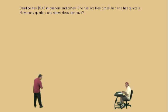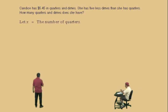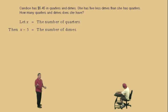Now, Candace has 5 dollars and 45 cents in quarters and dimes. Don't get scared. She has 5 less dimes than she has quarters. How many quarters and dimes does she have? I don't know. That's what we're going to figure out, Charlie. Let's let x equal the number of quarters. And since there are 5 less dimes, the number of dimes must be x take away 5.